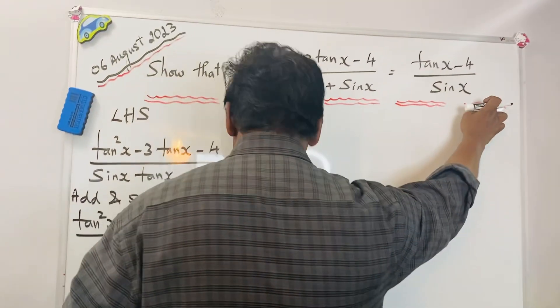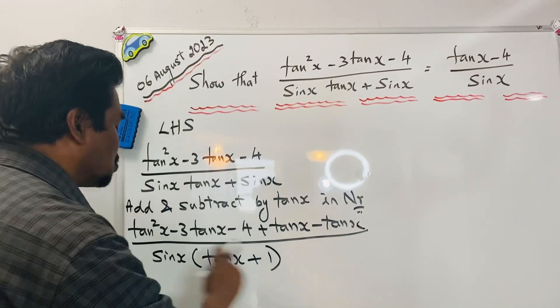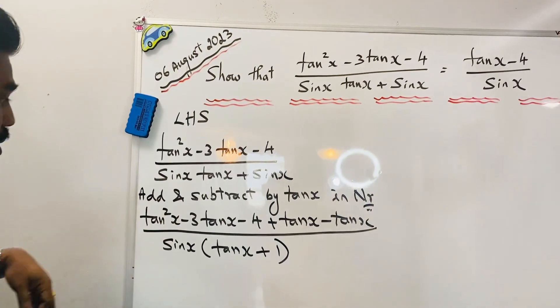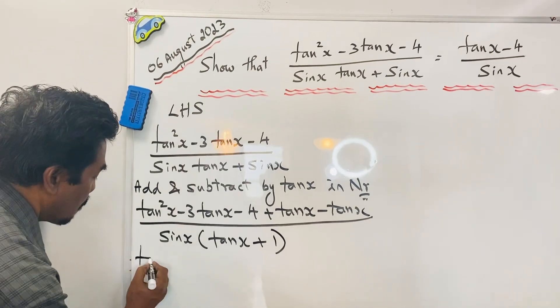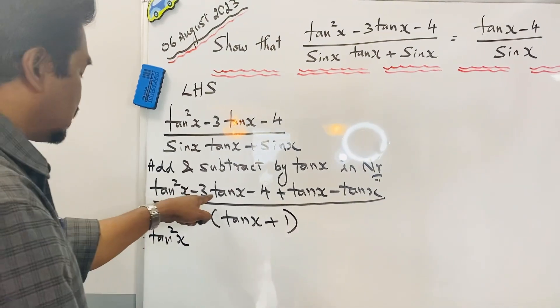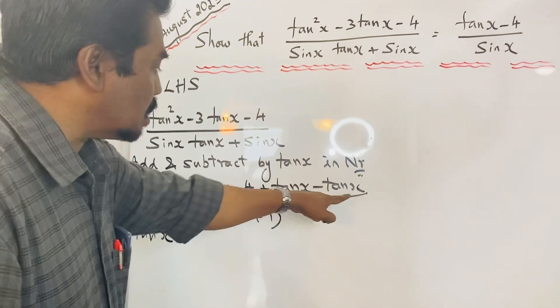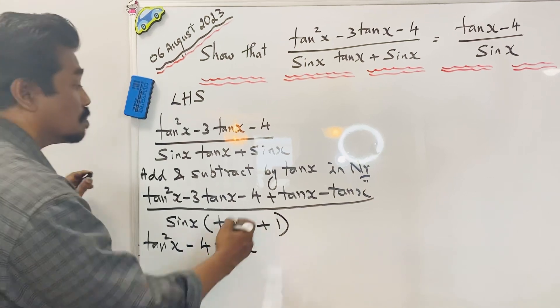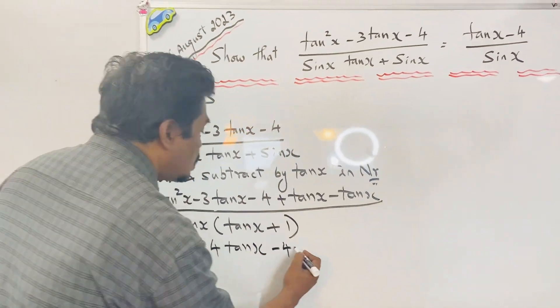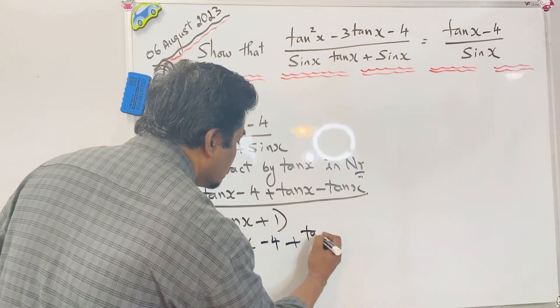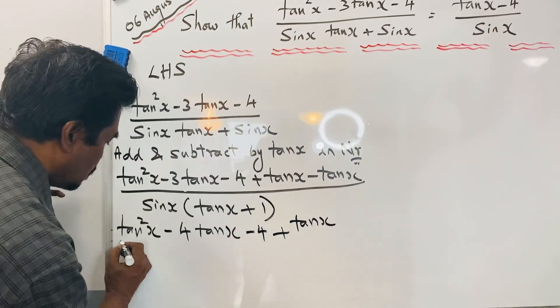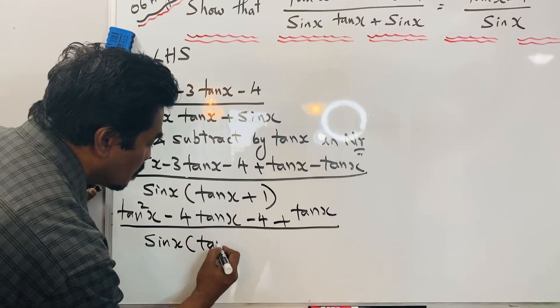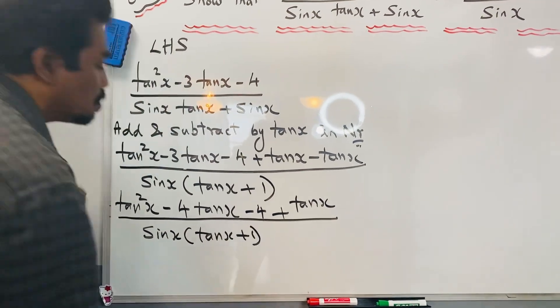So we do not have tanx + 1 here, so this should be removed. We need sinx, we have sinx. Now we have tan²x. There's 3tanx - tanx, it will become -2tanx. -4 + tanx over sinx(tanx + 1).